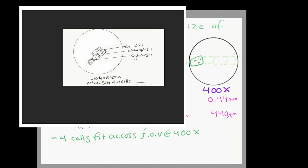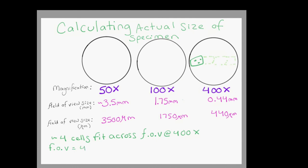So we know the field of view diameter is about 440 micrometers. So using this information, we can calculate the estimated size of one of these cells by dividing the field of view by 4 to give 110 micrometers.